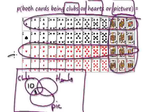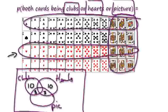Let's tackle the hearts now. There are 13 hearts, three of which are also picture cards — so ten and three here. Are there any hearts and clubs? Well, hearts and clubs are mutually exclusive, meaning there's no overlap. There's no card that's both a heart and a club.